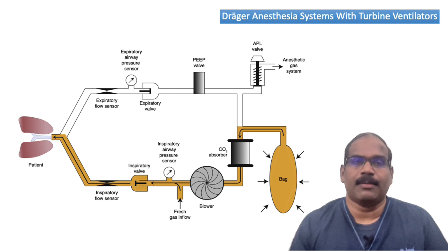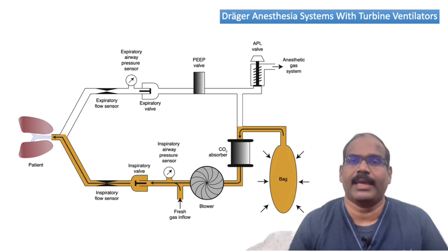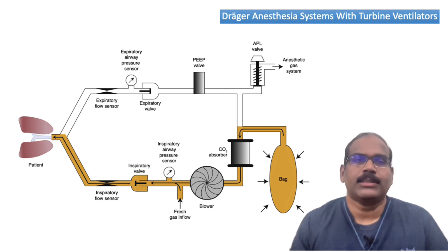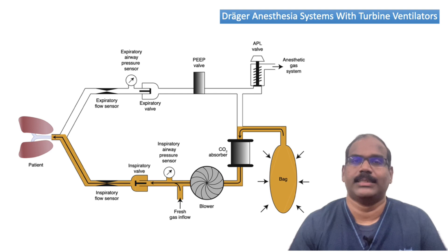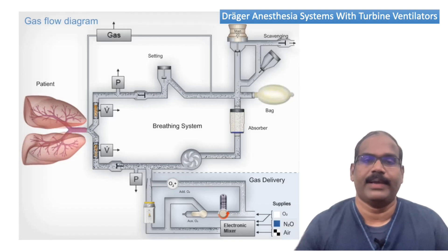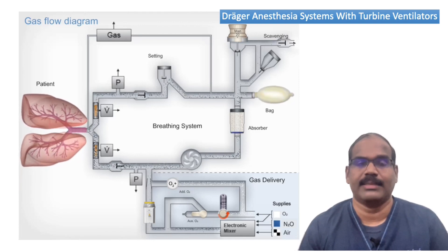Unlike piston ventilators, turbine ventilators are found in some manufacturers such as Draeger. They primarily have a pressure generator. Turbine ventilators use mechanical energy to spin a small turbine or fan at very high speeds to create pressure and flow. Possible functional advantages include better responsiveness to patient triggering, more effective pressure support ventilation, and in some cases more accurate tidal volume delivery under high ventilatory workload. You can see the working principle of turbine ventilators, with the turbine rotating faster during the inspiratory phase, driving gas into the lungs.